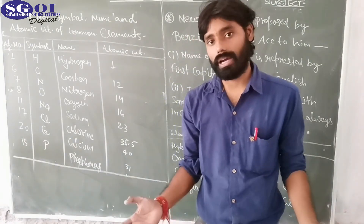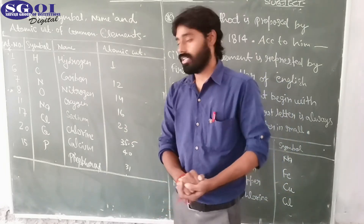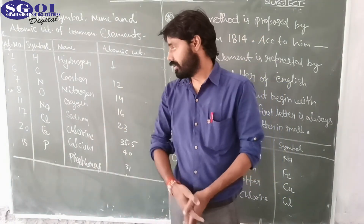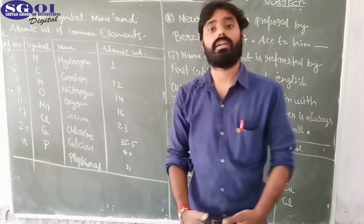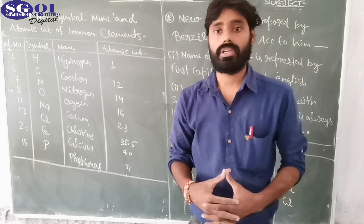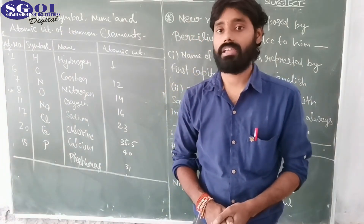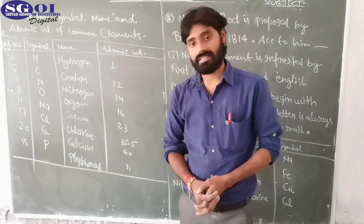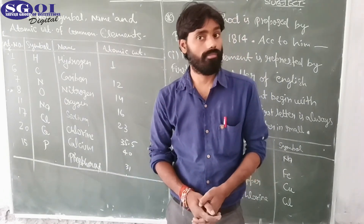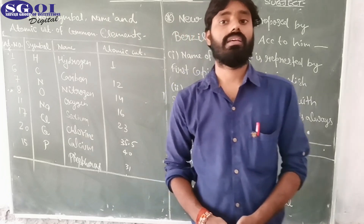Oxygen is denoted by O, atomic number 8, and atomic weight 16. Sodium is denoted by Na, atomic number 11, and atomic weight 23. Chlorine is symbolized by Cl, atomic number 17, and atomic weight 35.5. Calcium is denoted by Ca, atomic number 20, and atomic weight 40. Phosphorus is denoted by P, atomic number 15, and atomic weight 31.